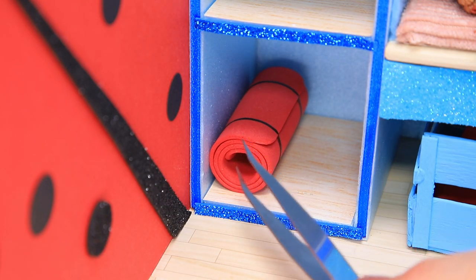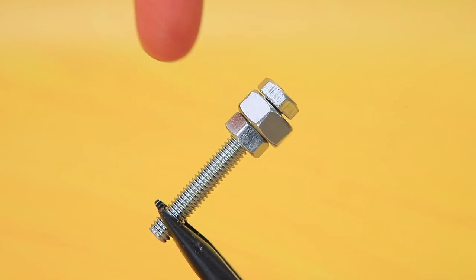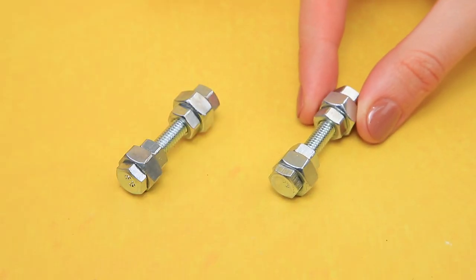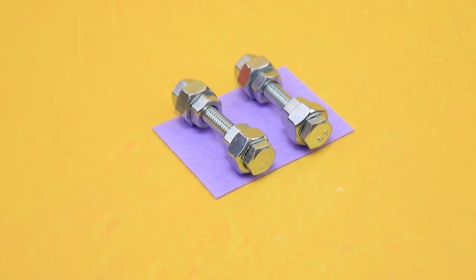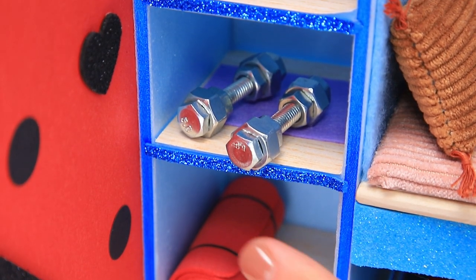Go to the bottom shelf. Make weights out of nuts and bolts. They're heavy. We have a spot for them, too.